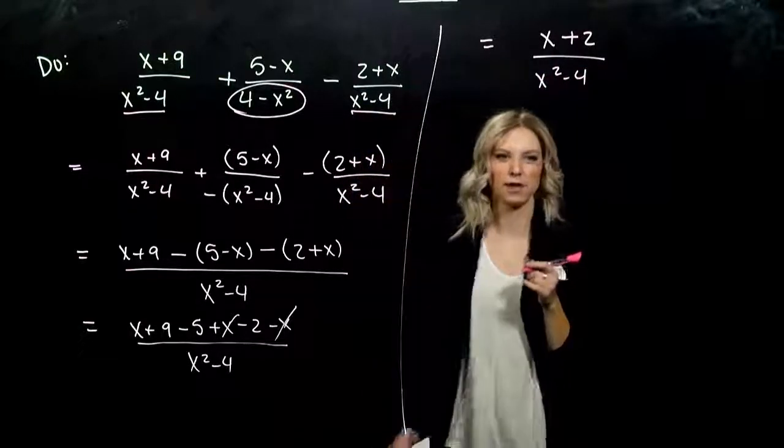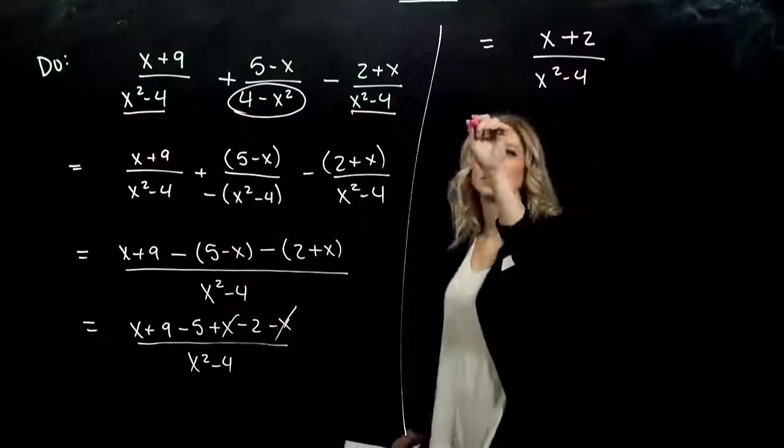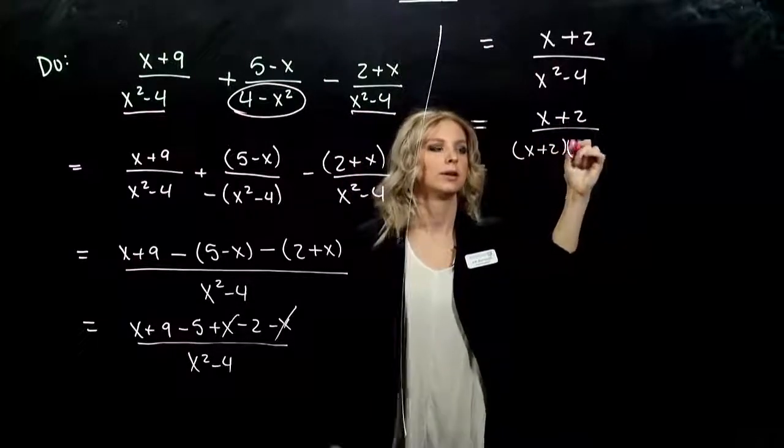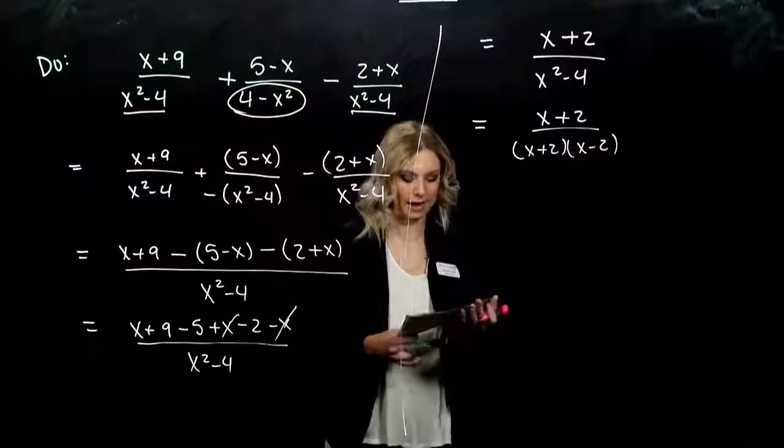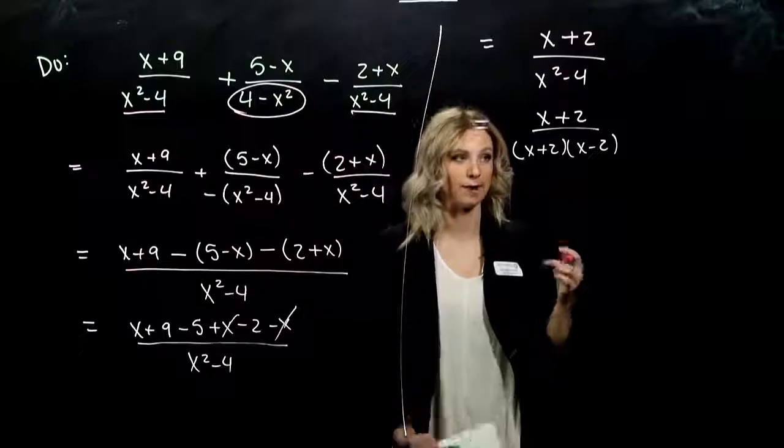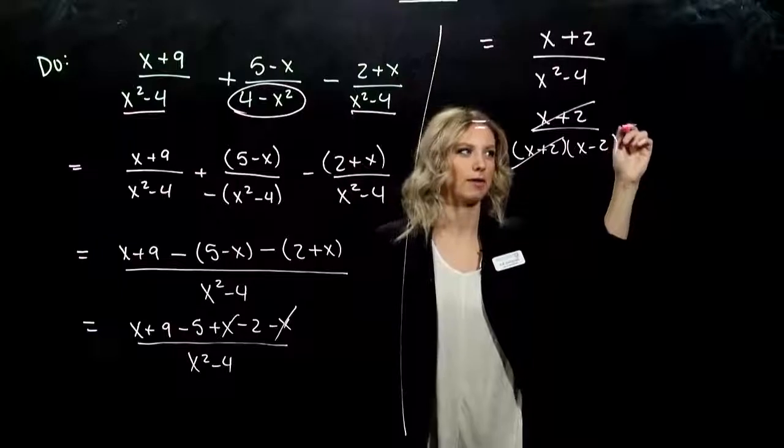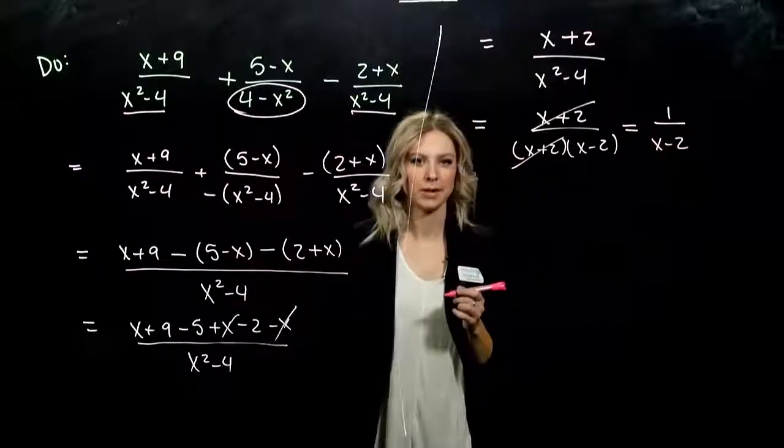Down below, I still have x squared minus 4. We haven't factored that, but can we? It is a difference of squares. So it factors into x plus 2, x minus 2. Now that everything is factored, let's simplify it. Common up top and down below is x plus 2 that we can get rid of. And what are we left with? 1 over x minus 2.